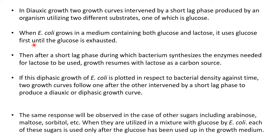One of those easier substrates is glucose. So when E. coli grows in a medium containing both glucose and lactose, you will see that it uses glucose first until the glucose is exhausted. After a short lag phase — the lag phase is there so that the bacteria gets time to produce enzymes which are required for the utilization of the other sugar, that is lactose — you find a short lag phase during which the bacterium synthesizes enzymes which are needed for lactose to be used, and then growth resumes with lactose as a carbon source.